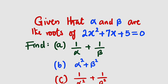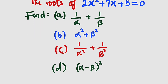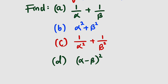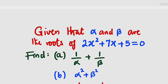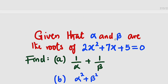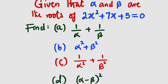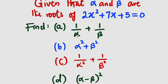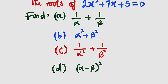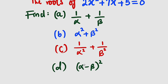Hello, good day viewers. In this tutorial, we are going to evaluate these four symmetrical functions of quadratic roots. We are given that alpha and beta are the roots of the quadratic equation 2x squared plus 7x plus 5 equal to 0. We are asked to evaluate 1 divided by alpha plus 1 divided by beta, alpha squared plus beta squared, 1 divided by alpha squared plus 1 divided by beta squared, and lastly alpha minus beta all squared.